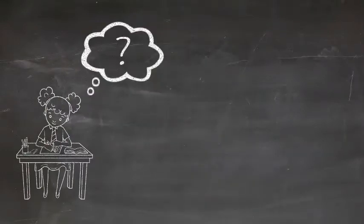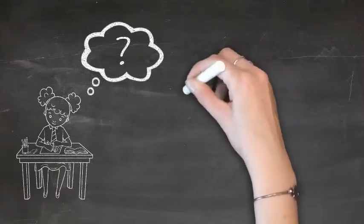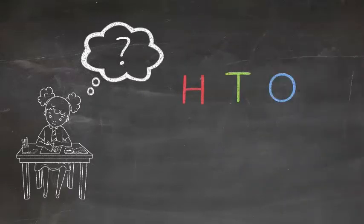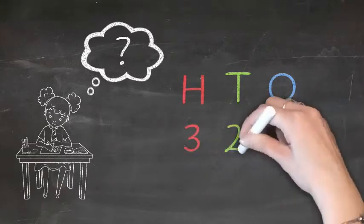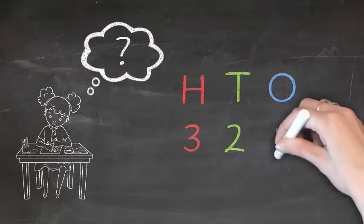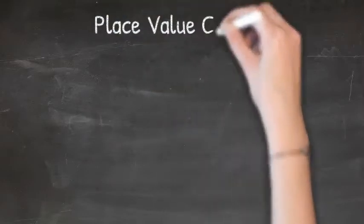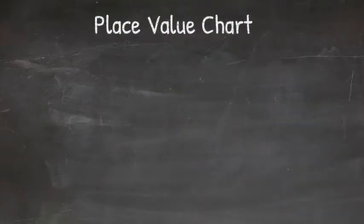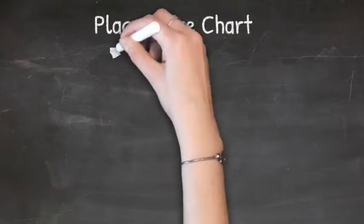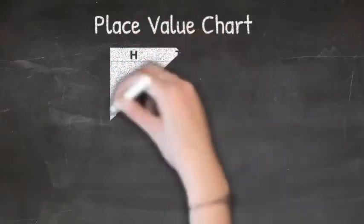Writing numbers into a place value chart helps you understand the value of each digit as well as keeping each digit in the correct place. So, why is place value important? Well, place value helps you understand the meaning and order of numbers. Take a look. If we draw a place value chart and place these numbers under each value, it explains exactly that.